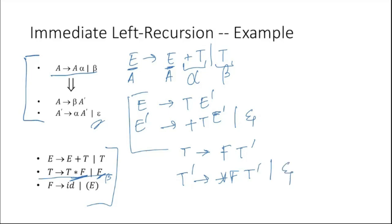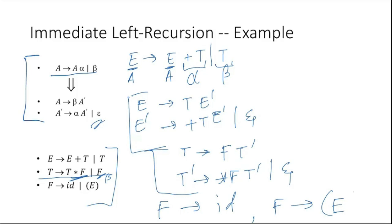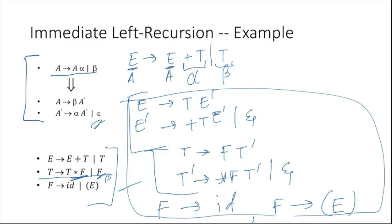We get four new production rules. The remaining rules F → id and F → (E) do not have any left recursion, so they stay as is. The full grammar has been rewritten by removing left recursion.